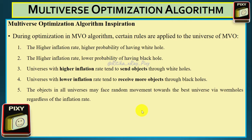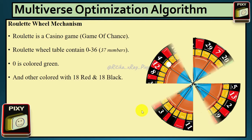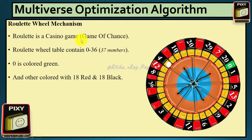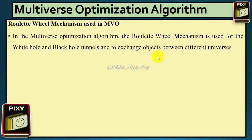Now we have the roulette wheel mechanism. Roulette is a casino game — a game of chance. On the roulette table, we have 37 numbers from 0 to 36; 0 is colored green, 18 are black, and 18 are red. In the game, you select a number and if the ball stops on your number you win, else you lose. In this algorithm we use the roulette wheel mechanism for white hole, black hole tunnel, and to exchange objects between different universes.